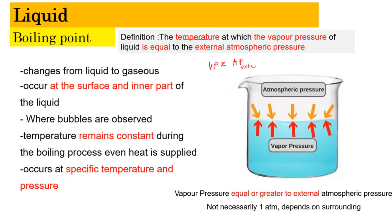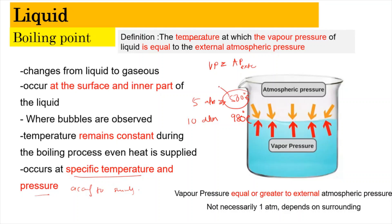When the vapor pressure equals the atmospheric pressure, the boiling process can occur. Boiling is a process in which liquid changes into gas; it occurs at the surface as well as the inner part of the liquid, and this is where bubbles can be seen. It occurs at a specific temperature and pressure according to its surrounding. For example, at 5 atm the boiling point might be 500°C, and at 10 atm it might be 980°C. The boiling point is therefore dependent on the external atmospheric pressure.